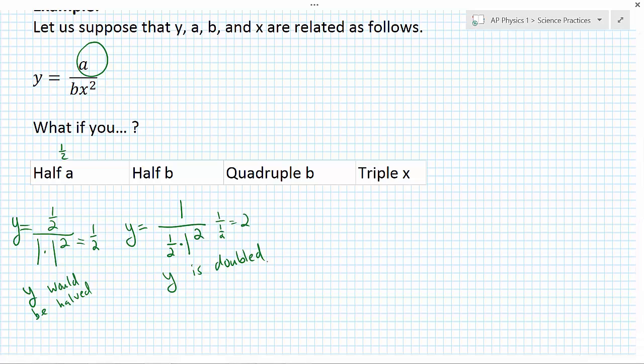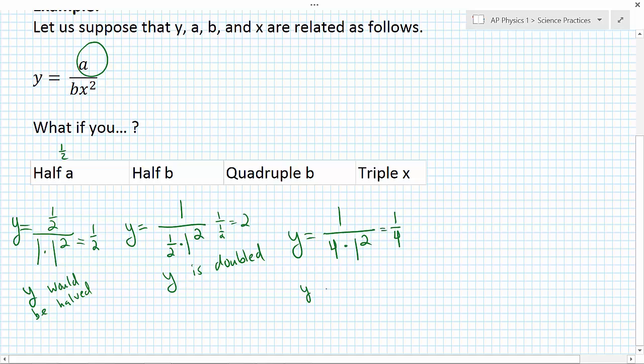Let's look at what would happen if we quadrupled b. So I take my original equation again, and let's assume that a and x are kept constant. We're going to keep a constant, so I'm going to put a one in there. Now b is going to be four times as big as it was, so I'm going to put a four instead of a one there, and we're going to keep x constant, one squared. When I reduce that down, y is going to be equal to a quarter of what it would be. So if I quadruple b, then y is affected by being decreased by a factor of four, or quartered.